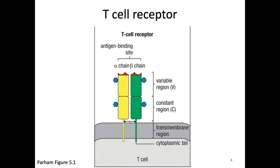Why is that a problem? We need to do some signaling from this receptor, but there's no cytoplasmic region to do signaling - no tyrosine to get phosphorylated, no kinase to do any phosphorylating. This receptor just stops. This is yet another reason why we need additional proteins to help out the T-cell receptor.